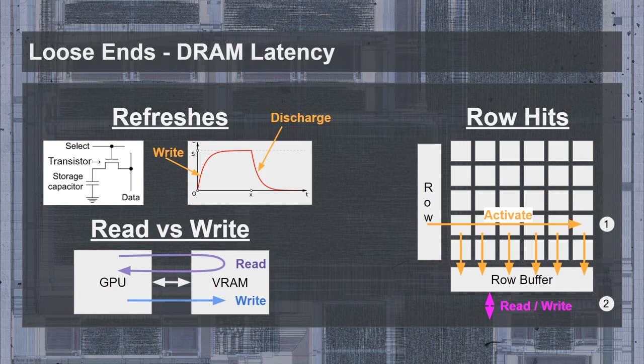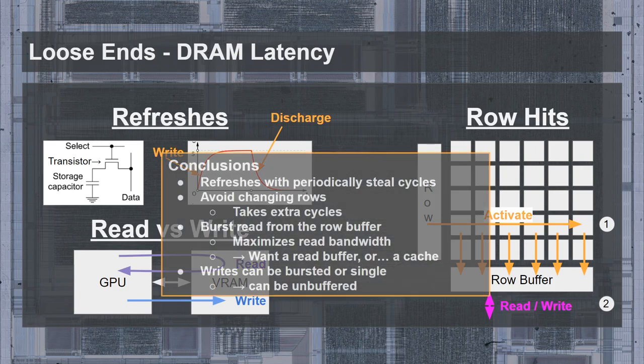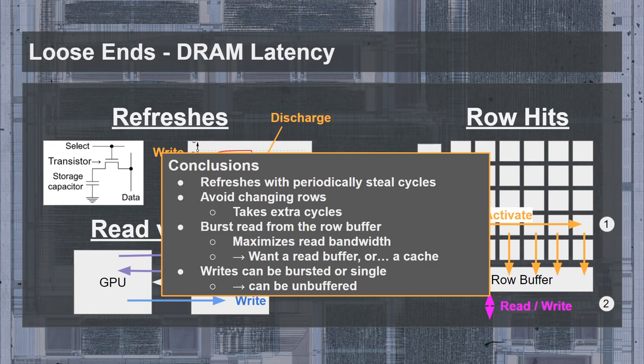There is also an asymmetry when comparing read and write performance. Mid-1990s DRAM could perform a read or write in a single cycle, but it's difficult to overlap reads, since the GPU needs to send the address to the VRAM and then wait for a response. You can overlap reads if they are one after another in memory — this is called bursting. So the VRAM conclusions are: memory refreshes will periodically steal cycles; you want to avoid changing rows in DRAM because that takes extra cycles; burst reads from the row buffer are best compared to one-off reads because they can maximize read bandwidth. That works well for texture caches. Note that row changing and burst reads are another motivation for render tiles — the Voodoo GPUs specifically sized their render tiles so that two tiles occupy a single DRAM page.